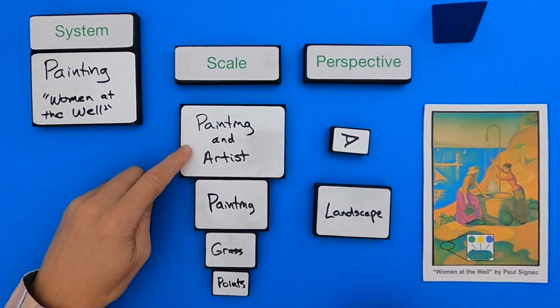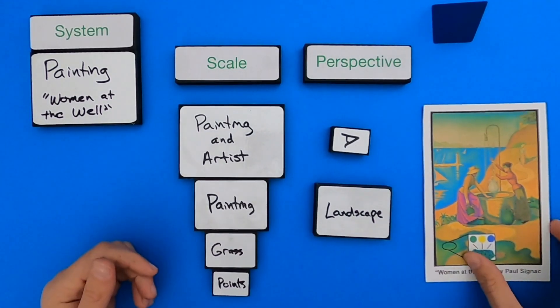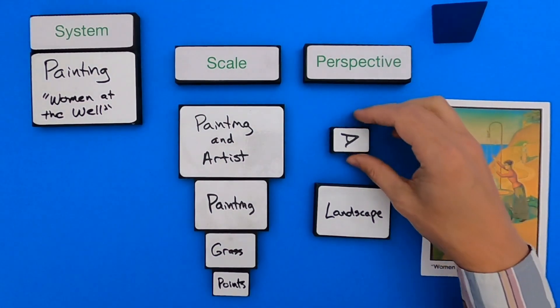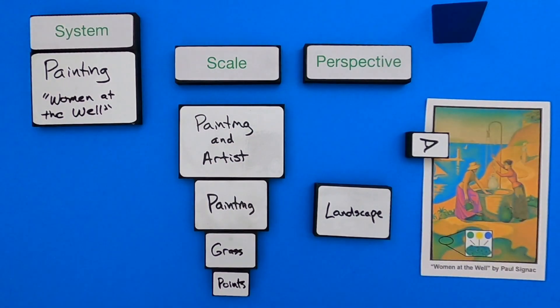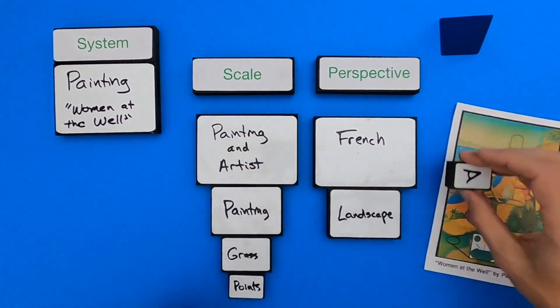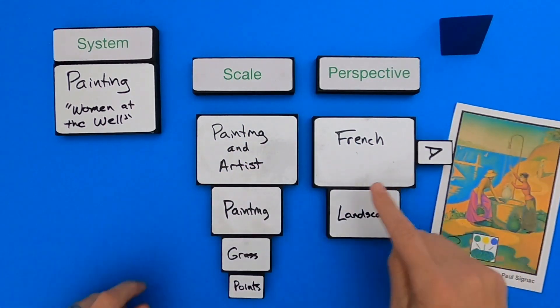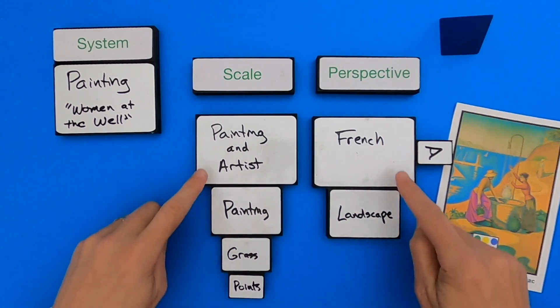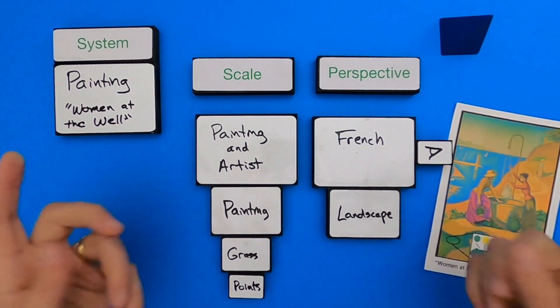So let's move it to a different perspective. What are some things that I notice when I go to a higher level? Well I have to look outside the painting itself. So I see Women at the Well, and I see that's by Paul Signac. And I could say like, I know that is a French artist. So let me write that down from a different perspective. So at this level, I know by looking at the painting and the artist itself, not only is it a landscape, but it's painted by a French artist.